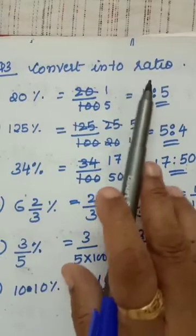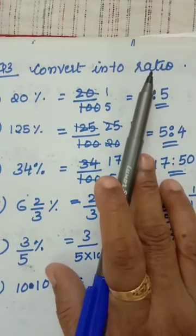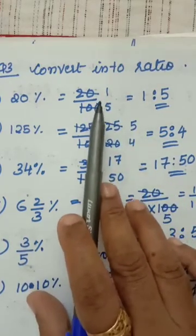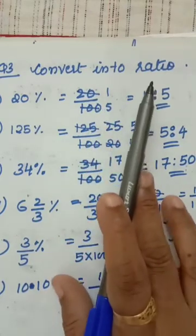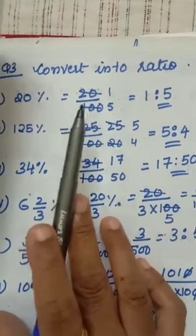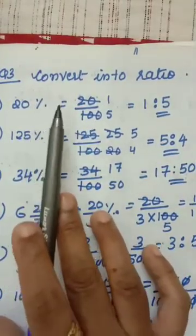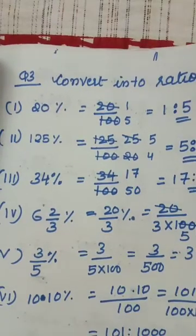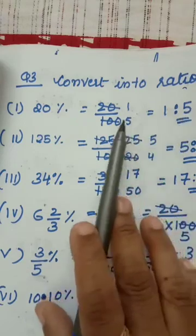Question number 3: convert into ratio. Ratio means division only — divisional form, but you write the numerator and denominator separately with a ratio sign. 20 percentage means 20 divided by 100, which is 1 by 5. You write in ratio form: 1 ratio 5.